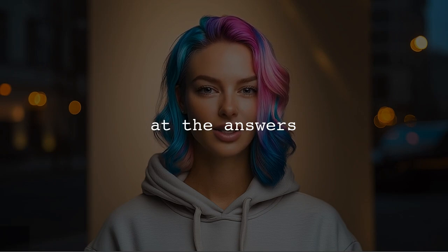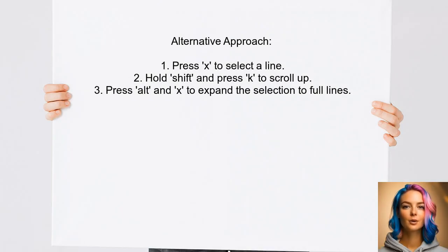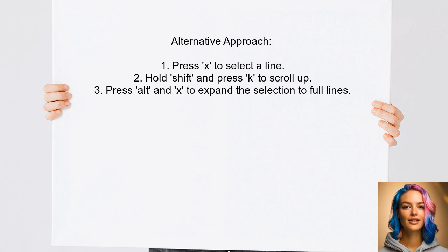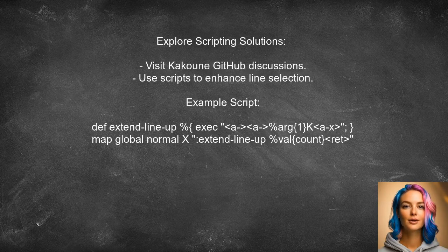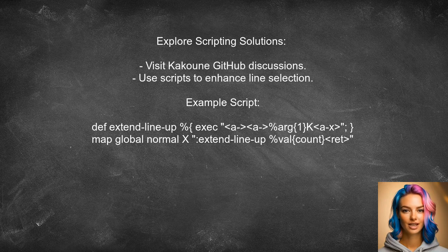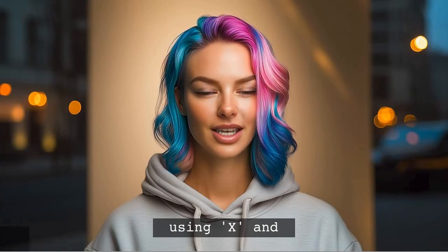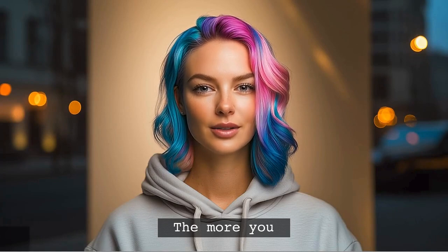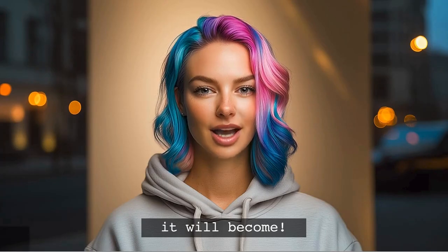Now let's look at answers provided by other users. An alternative approach involves first pressing X to select a line, then scrolling up by holding Shift and pressing K. Once you've reached the desired lines, expand the selection to include full lines by pressing Alt+X. For more advanced solutions, check the Cocoon GitHub discussions for scripting options — one useful script allows you to extend selections upwards and downwards more efficiently. Here's that neat trick I promised: practice using both the X and K keys together to get comfortable with the selection process. The more you practice, the easier it will become.